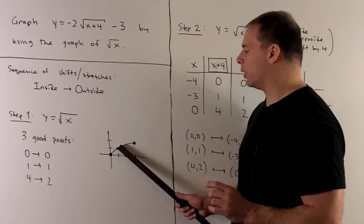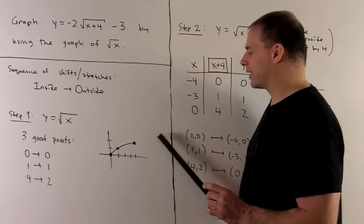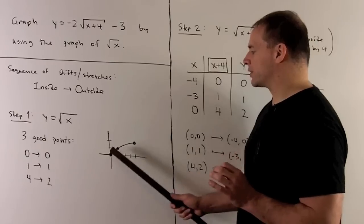So there's 0,0; 1,1; and then we go over 4 up 2. Connect the dots. So it's my graph of square root of x.